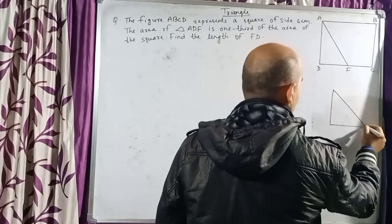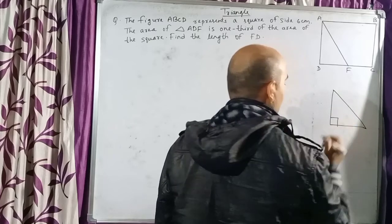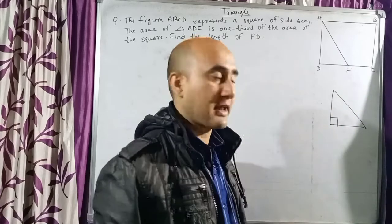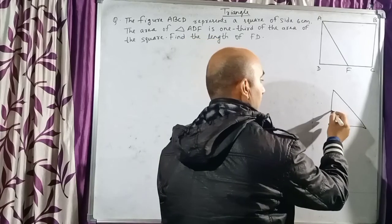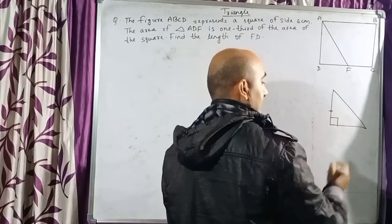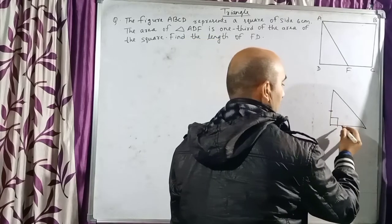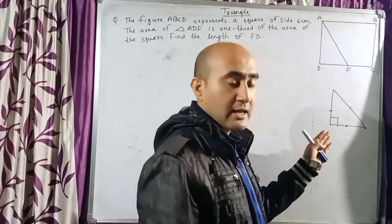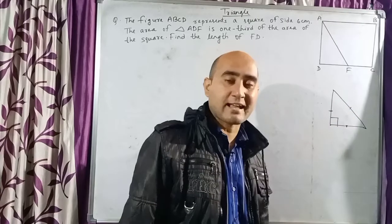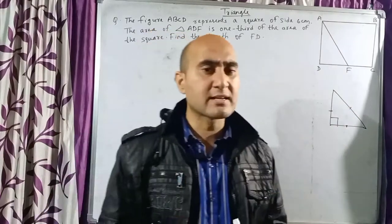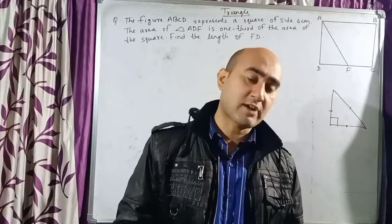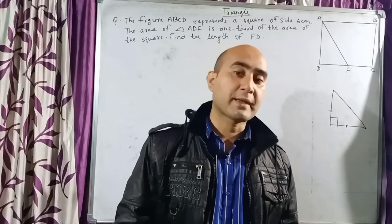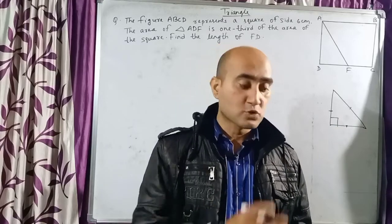If a triangle has one angle of 90 degrees, then it is called a right-angled triangle. The vertical side is called the perpendicular or height, the horizontal side is called the base, and the longest side is the hypotenuse.